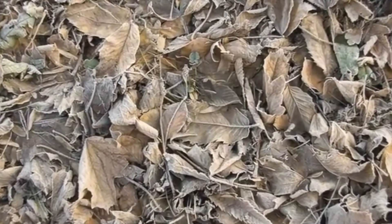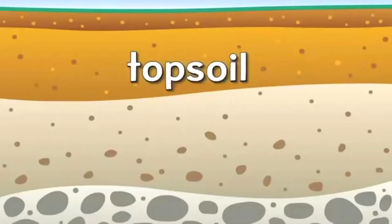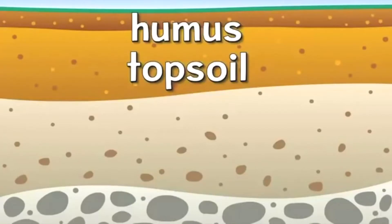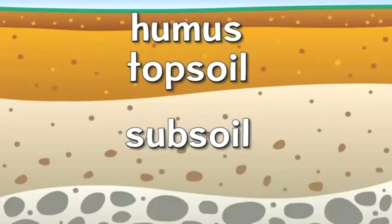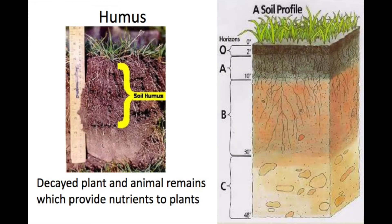Earlier we said that soil is a system. It is a system because it is composed of different layers with a special function to perform. If we dig deep into any soil, you will see that it is made up of layers. At the very top is the humus layer. It is thin in some soil, thick in others, and sometimes not present at all. Humus is mostly organic materials, such as dead plants and animals, which helps provide nutrients to plants.